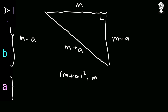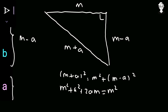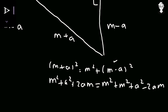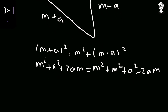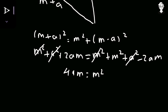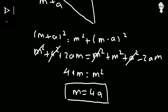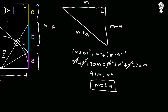Applying the Pythagorean theorem: (M + A)² = M² + (M − A)². Expanding: M² + A² + 2AM = M² + M² + A² − 2AM. The M² and A² terms cancel, giving us 4AM = M², so M = 4A. We have eliminated one variable — M equals four times A.